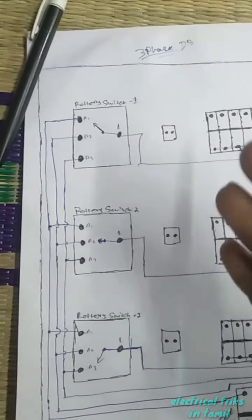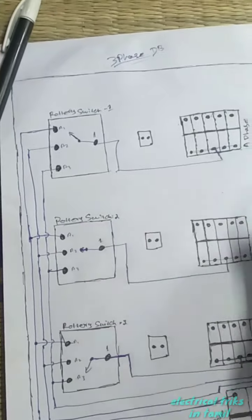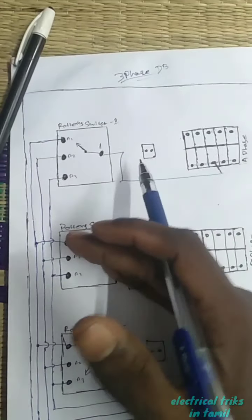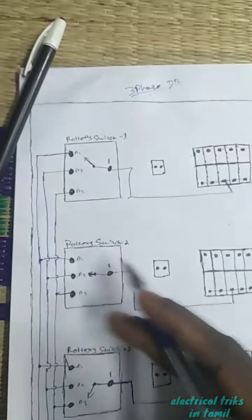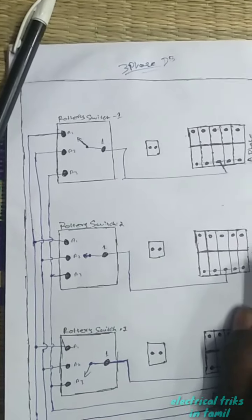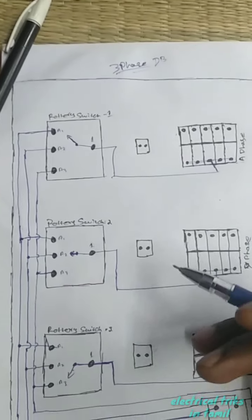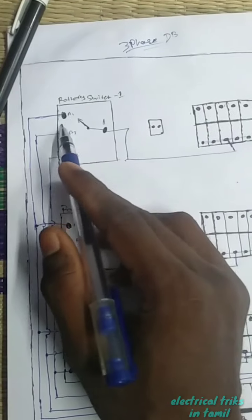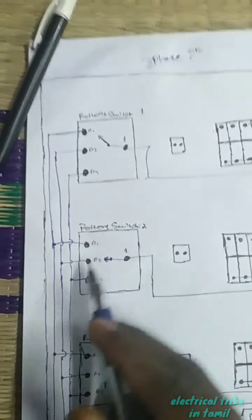If you see the 3 MCP, you will get the same power. When all the 3 MCPs are connected, you will get the primary supply. This 1 MCP is a 4 MCP. As you can see, this rotor switch handles 63 amps and 40 amps. There are two ACs connected through this rotor switch at 63 amps.